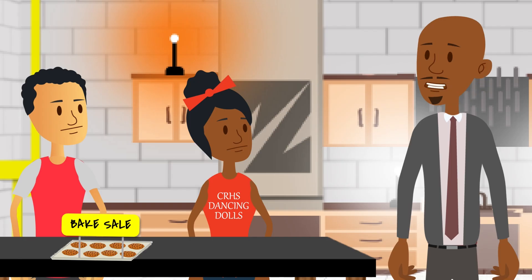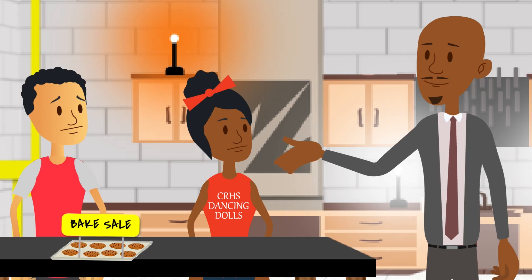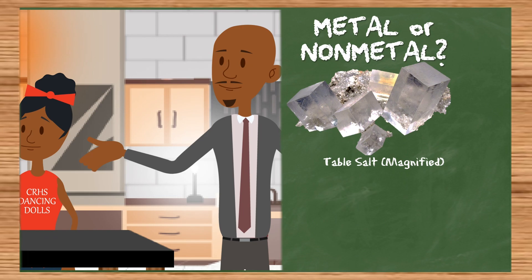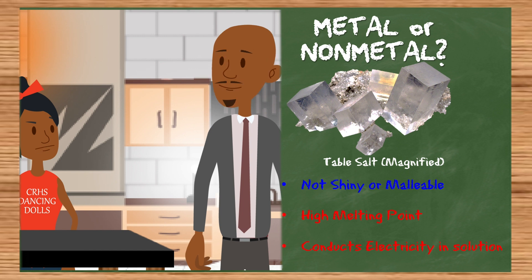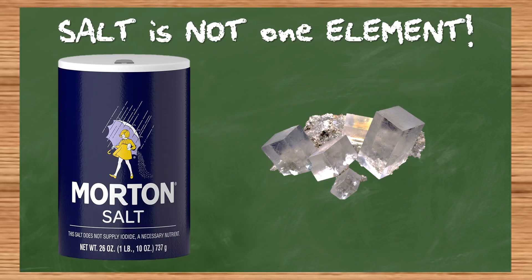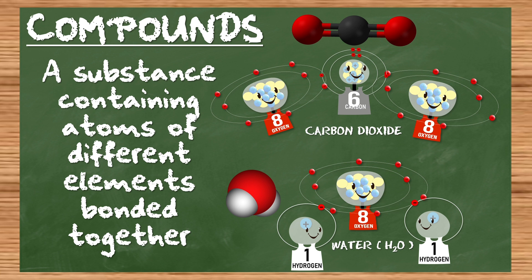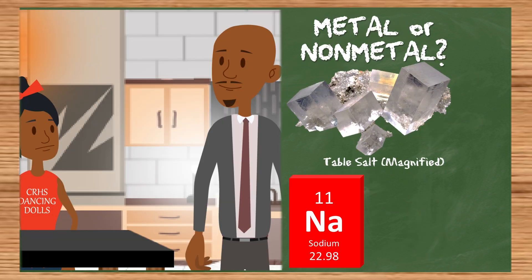Non-metals have low melting and boiling points. So that salt that you baked those disgusting cookies with — is it a metal or a non-metal? It's not shiny or malleable, but it has a high melting point and can conduct electricity in a solution. Oh, sounds like it's both to me. That's because it is — table salt is not one element, it's actually a compound.